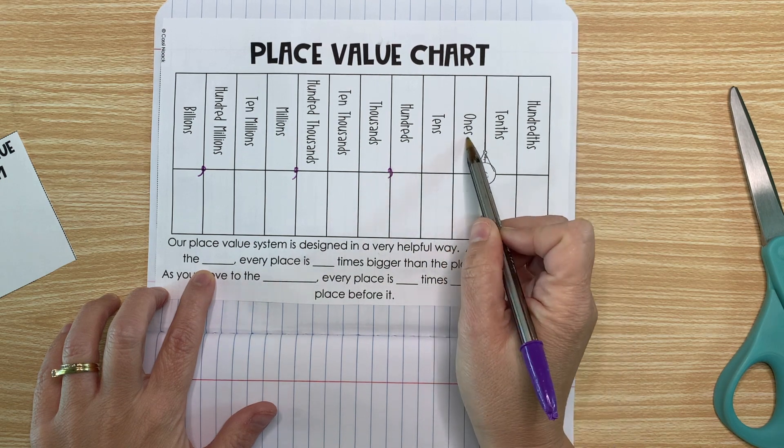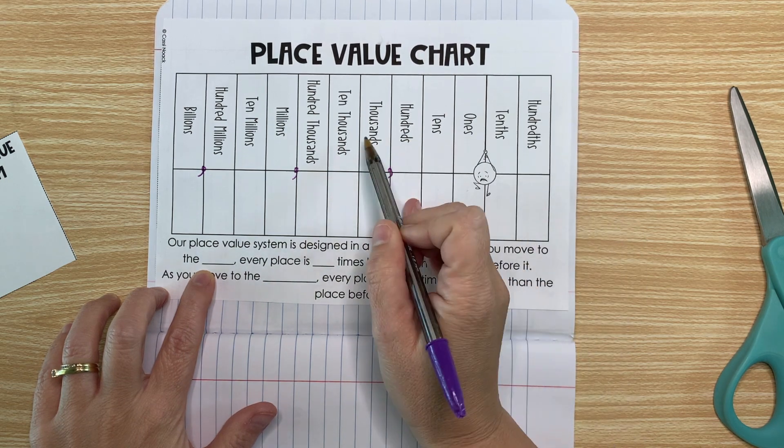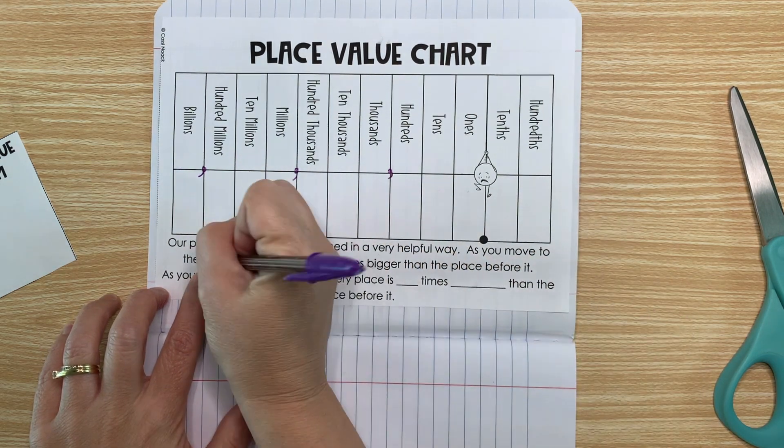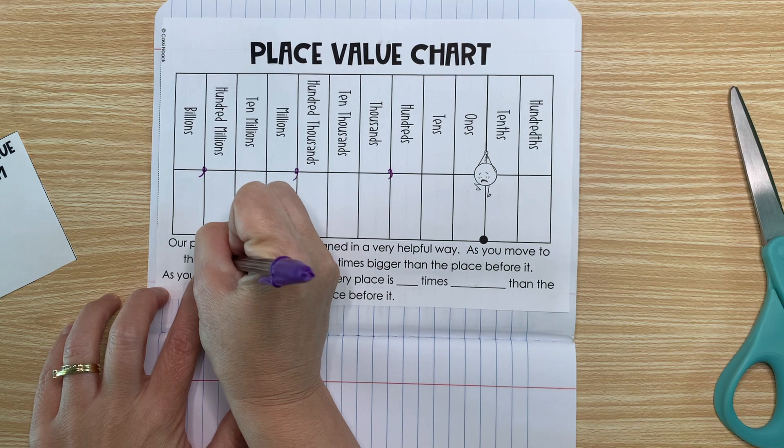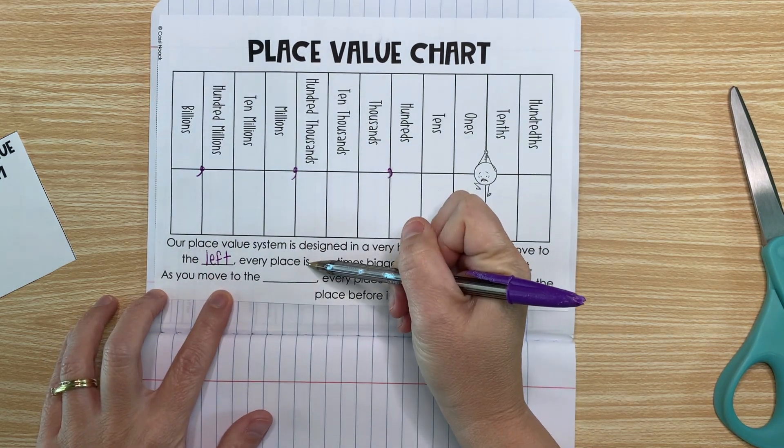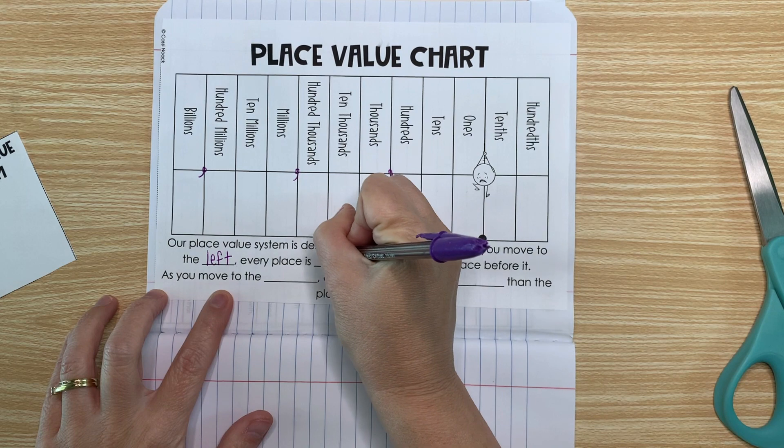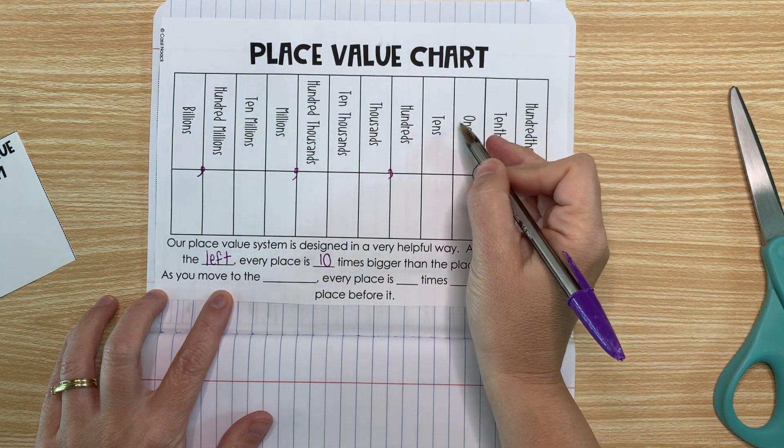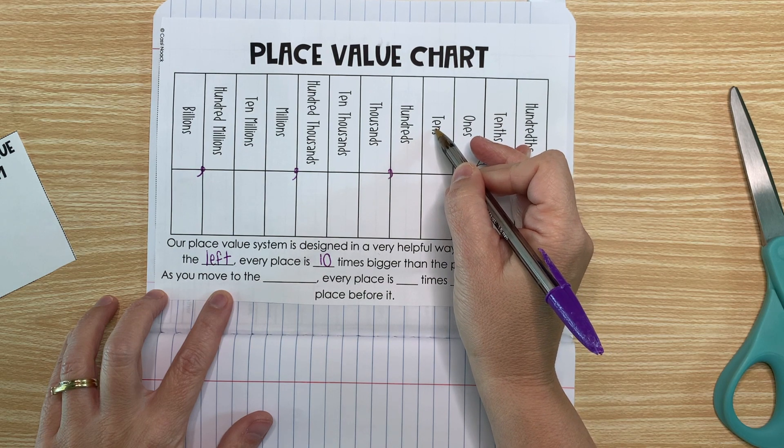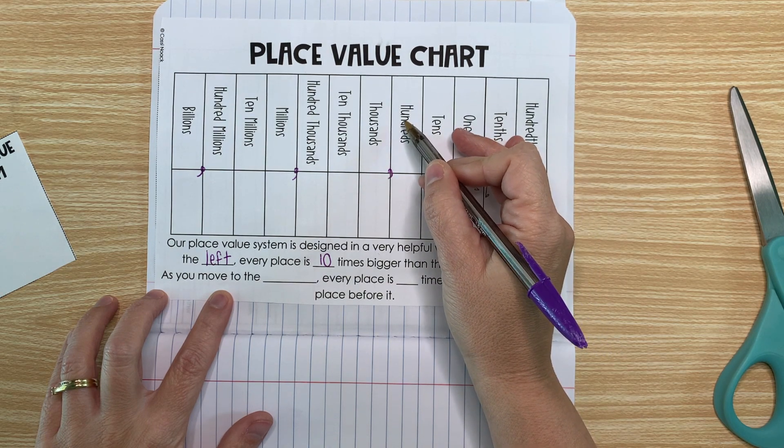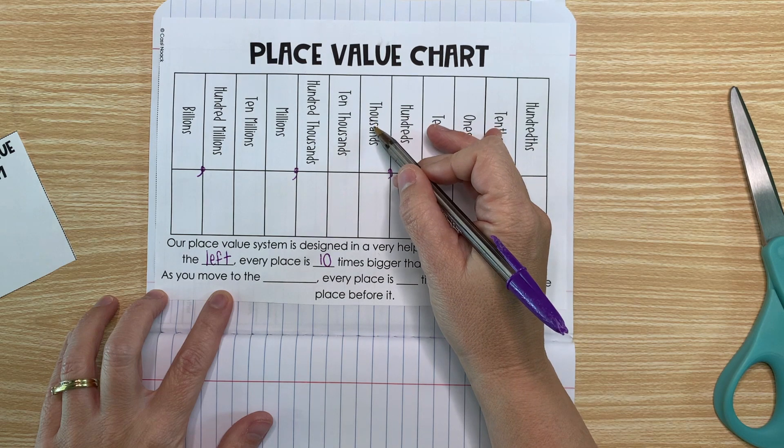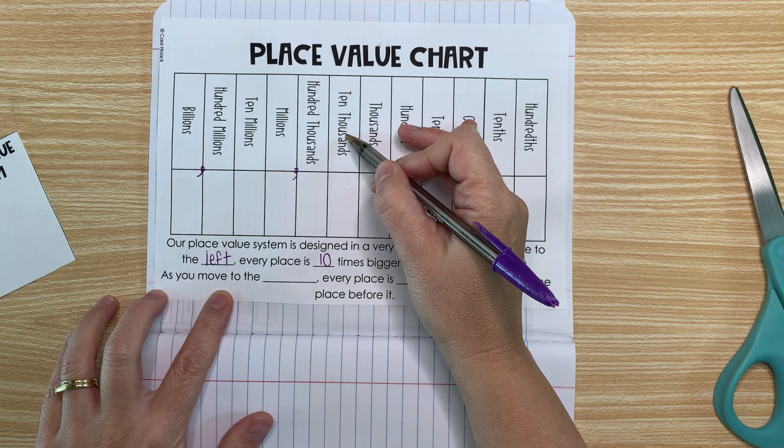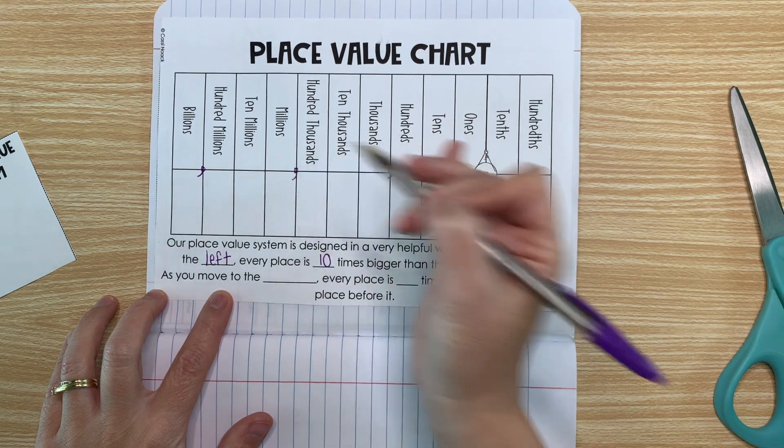A 10 is bigger than 1. A hundred is bigger than 10. A thousand is bigger than a hundred. So as you move to the left, every place is 10 times bigger. 10 times 1 is 10. 10 times 10 is 100. 100 times 10 is 1,000. A thousand times 10 is 10,000. Keeps going like that forever.